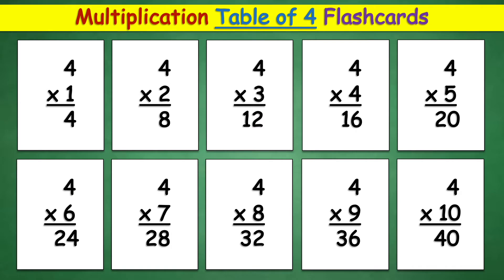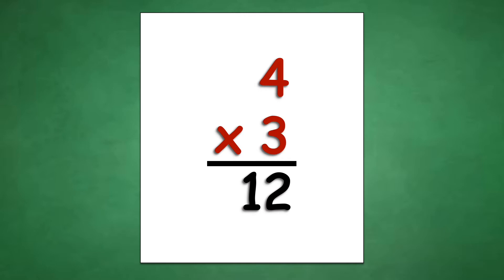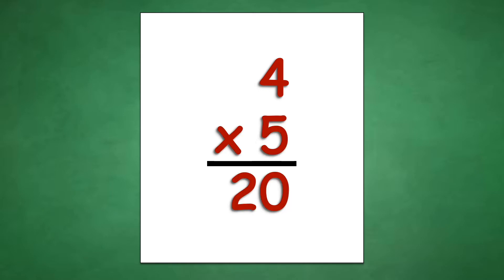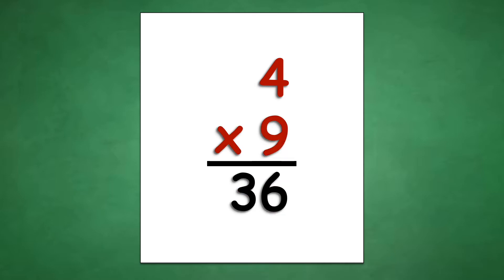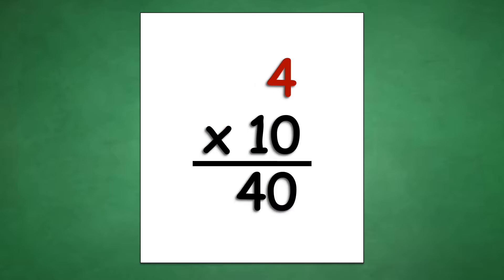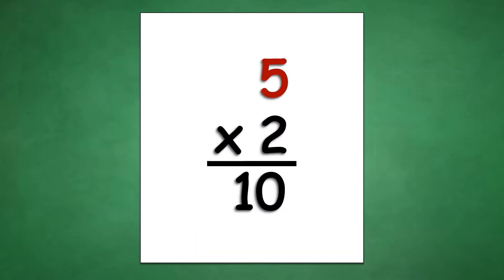Table of 4: 4 times 1 equals 4, 4 times 2 equals 8, 4 times 3 equals 12, 4 times 4 equals 16, 4 times 5 equals 20, 4 times 6 equals 24, 4 times 7 equals 28, 4 times 8 equals 32, 4 times 9 equals 36, 4 times 10 equals 40.